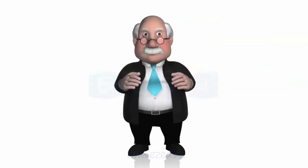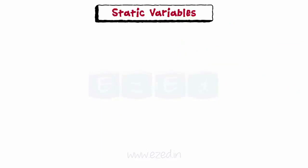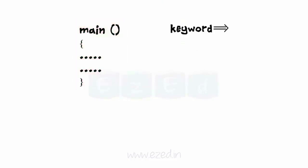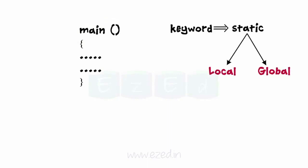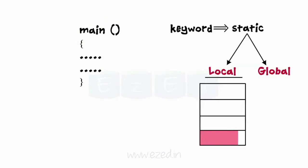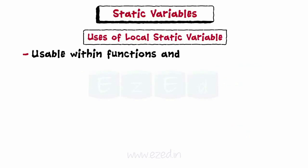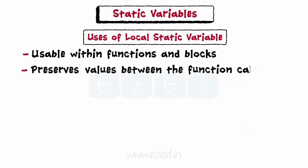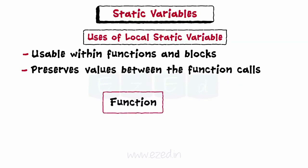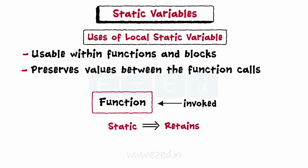Pay attention — this is important. Now let us learn static variables. The value of a static variable persists until the end of the program. A variable can be declared static using the keyword static. The kinds of variables allowed to be of type static are local and global variables. A static local variable is allotted a permanent storage location in the primary memory. This variable is usable within functions and blocks where it is declared and preserves its previous values between function calls or block re-entries. Whenever a function is invoked, the static local variable retains the value held in it.